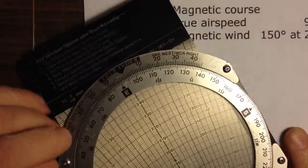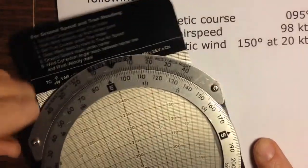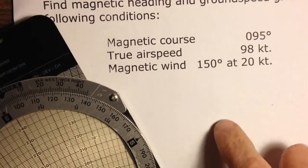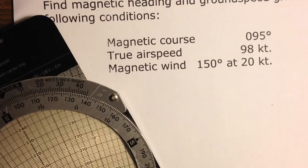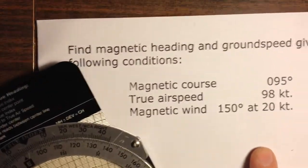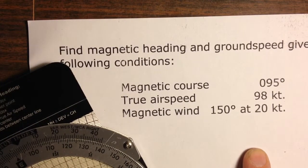So here's our situation. I want to fly a magnetic course of 95 degrees. I want my airspeed over the ground to be 98 knots, and the magnetic wind is 150 degrees - it's coming from 150 degrees and blowing at 20 knots. I want to find out what magnetic heading I should steer and what ground speed will prevail in this situation.